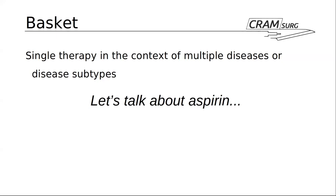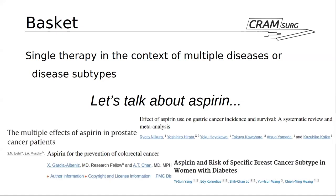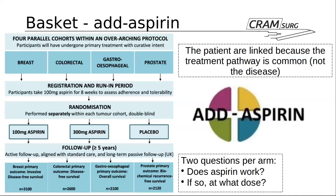To understand basket protocols, we'll look at aspirin. Because aspirin has been given so widely in the context of cardiovascular prevention, it has been linked to benefits in a number of different cancers — prostate cancer, colorectal cancer, gastroesophageal cancer, and breast cancer. Aspirin is appealing as a treatment option: it's very cheap, well known, and accepted by the public. If it works in the context of any cancer because they share a common biochemical pathway in the evolution of the cancer or metastasis, it would be an ideal drug to explore — and that's exactly what the AddAspirin trial is about.